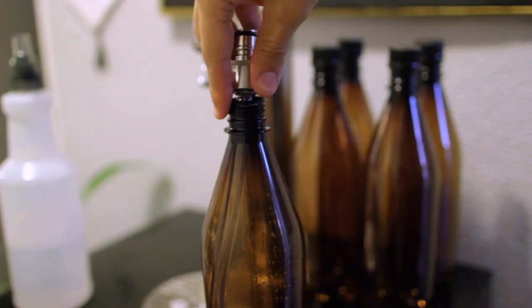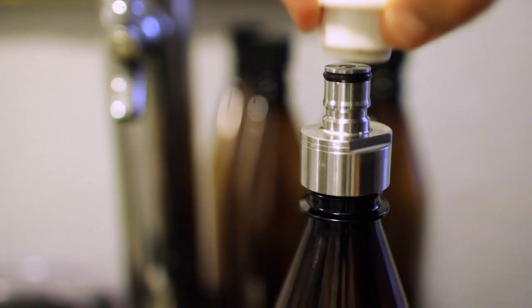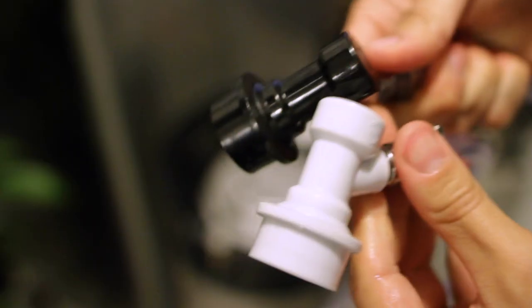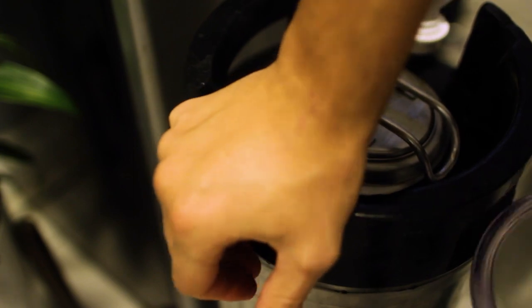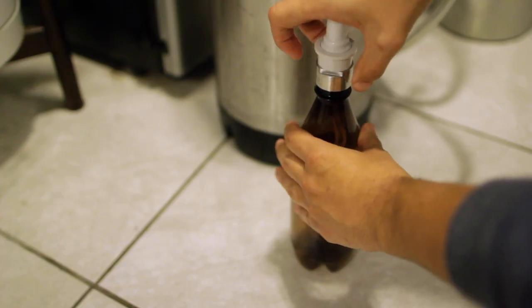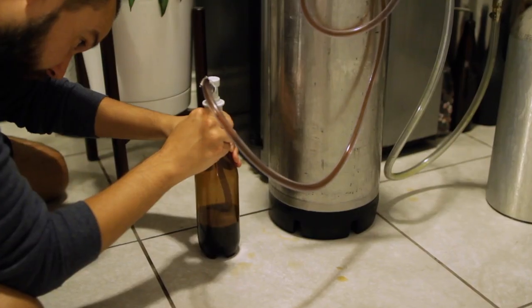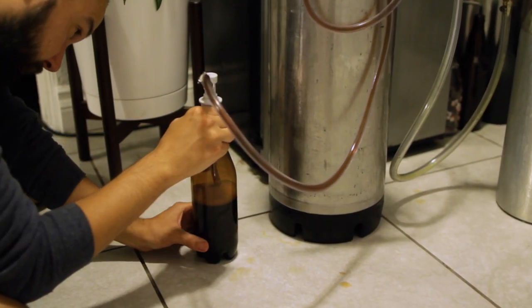First, you need to cut some tubing to the length of your bottle and attach it to the cap. Then you can screw it onto the bottle. Now you can add CO2 to purge the bottle and then attach a jumper cable from your keg to pressure transfer in. I showed this process in my gifting homebrew video if you want to see more, but that's not all this is great for.